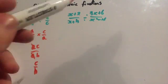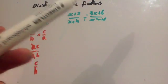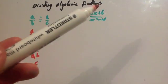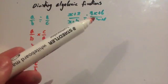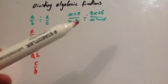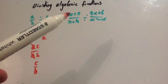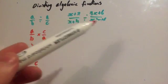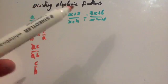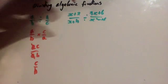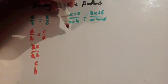Okay, this one here. Remember from multiplying algebraic fractions — I want to factorise it first, then do the division by changing the sign to multiply and flipping it over, and then I'll see if anything cancels out. So the first step is to do the factorisation.